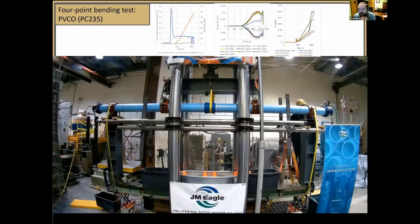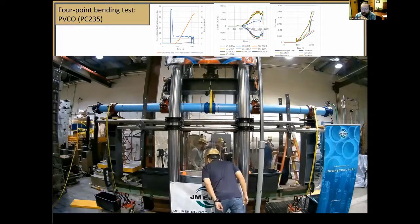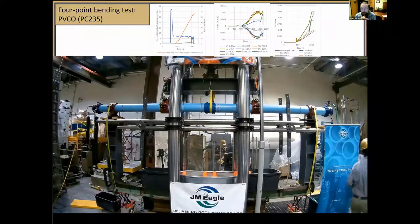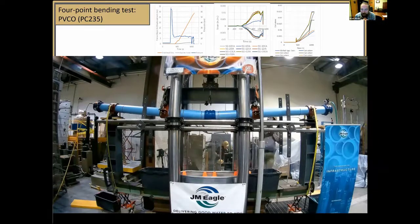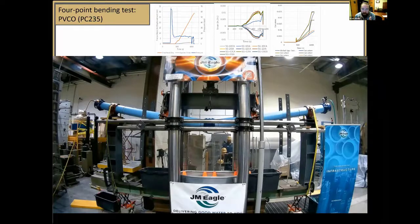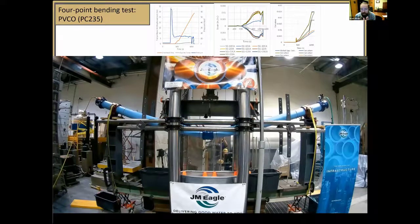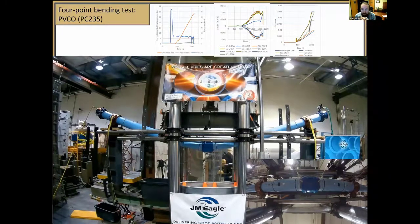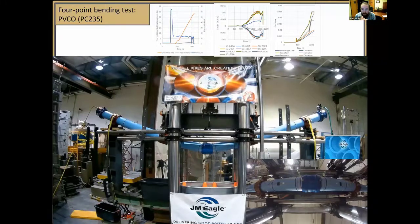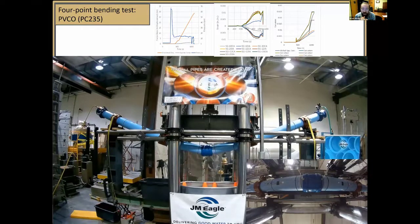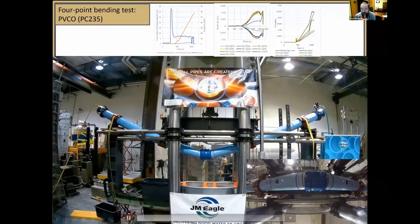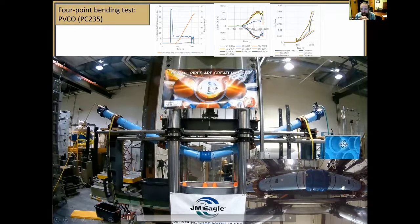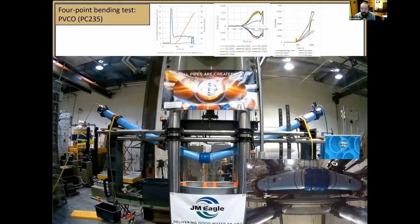As part of this testing program, this video shows the lateral loading test in our million-pound frame. We're applying load by dropping our crosshead and continue to apply load until we get to a serviceability limit state and an ultimate limit state. We're thinking serviceability limit state for this test occurs when we get the first leak at the joint. We don't want our pipes to leak, so we would consider leakage on the order of a drop per second to be a serviceability state.